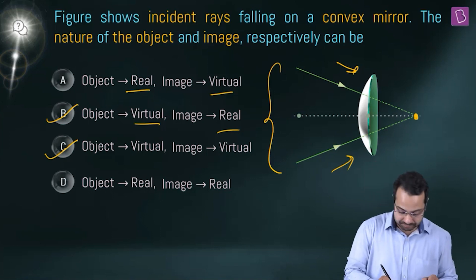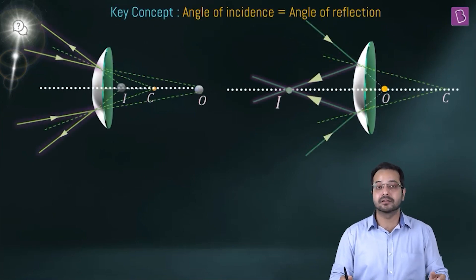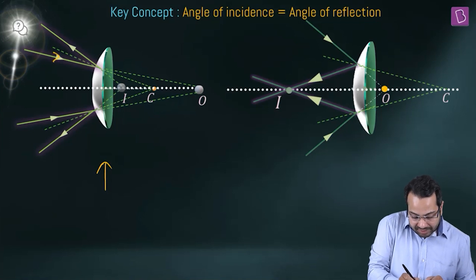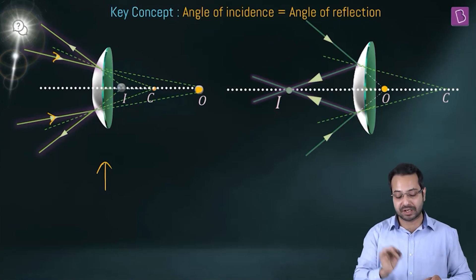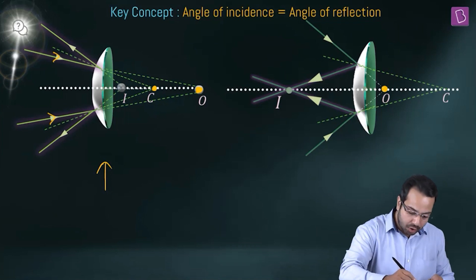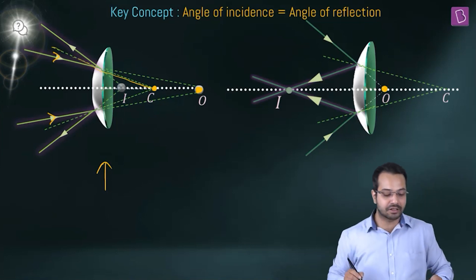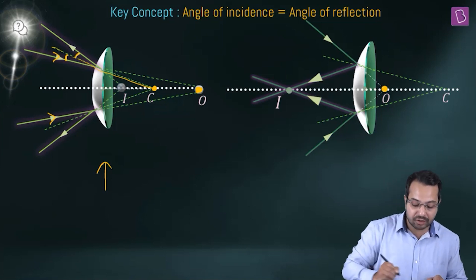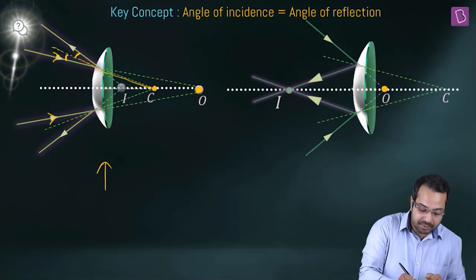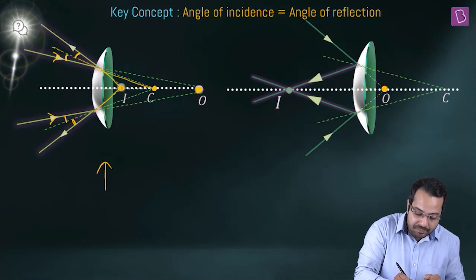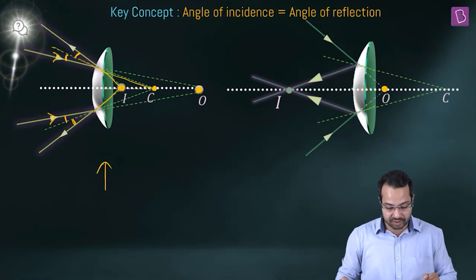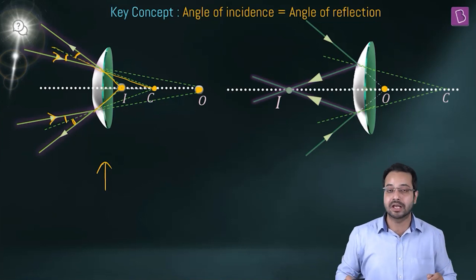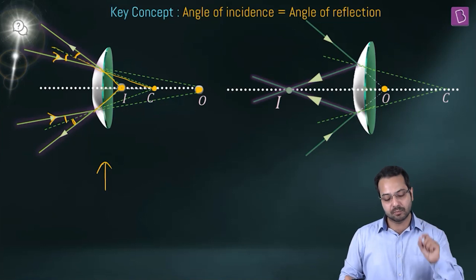We need to decide between the remaining options. Using the law of reflection (angle of incidence = angle of reflection): if the virtual object is to the right of the center of curvature, the reflected rays when produced backwards intersect behind the mirror — giving a virtual image.